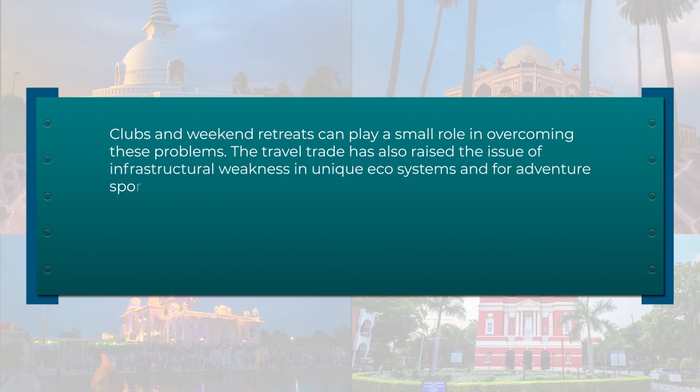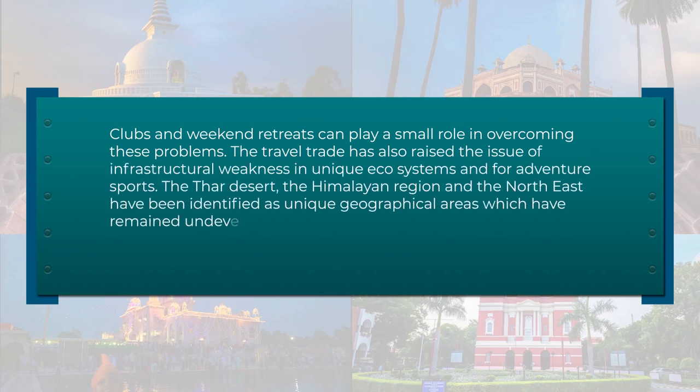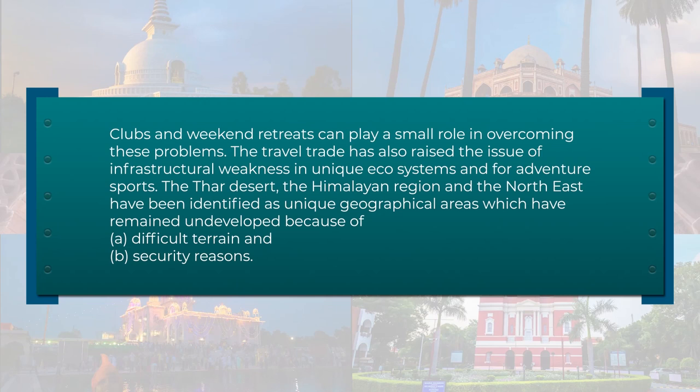Clubs and weekend retreats can play a small role in overcoming these problems. The travel trade has also raised the issue of infrastructure weaknesses for unique ecosystems and adventure sports. The Thar Desert, the Himalayan region, and the Northeast have been identified as unique geographical areas which have remained undeveloped because of difficult terrain and security reasons. Now that inner-line restrictions have long been removed, improvement of infrastructure and accessibility of these destinations is underway — with extension of airports, the UDAN scheme, new accommodation units, promotion of bed-and-breakfast units, homestays, rafting, adventure tours, and so on.